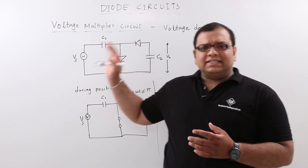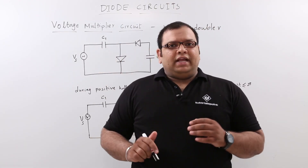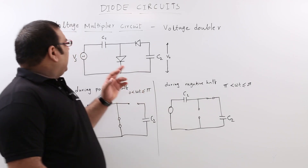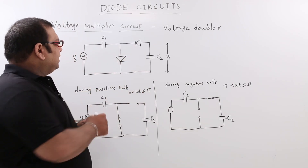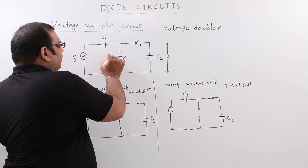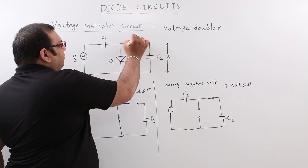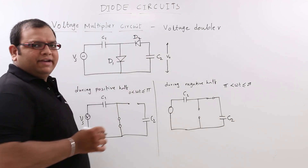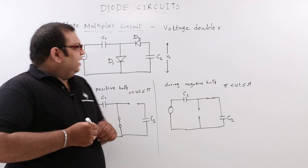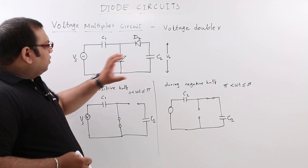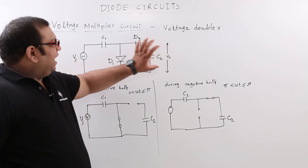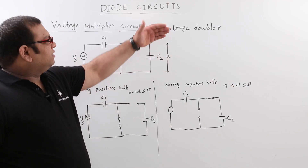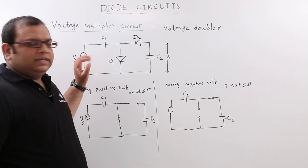Let us discuss about the voltage doubler circuit first. In the voltage doubler circuit we will have two diodes, D1 and D2, and two capacitors C1 and C2. The output is taken across C2 and this output will be 2 times of the input peak voltage.